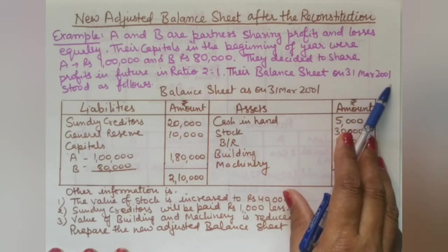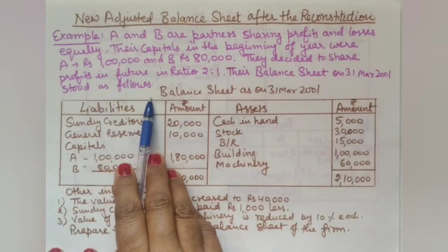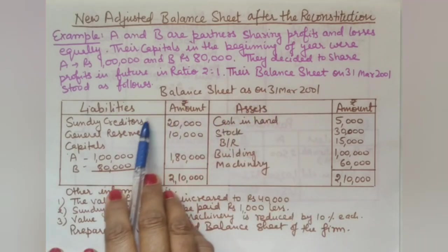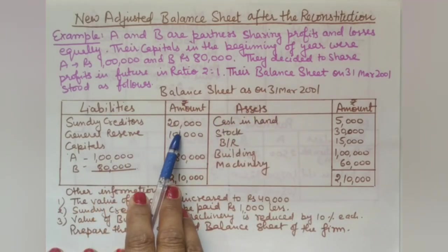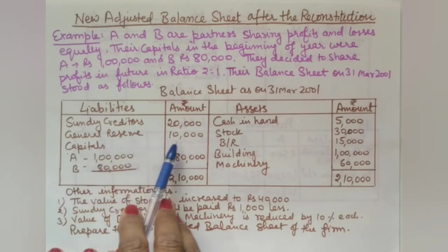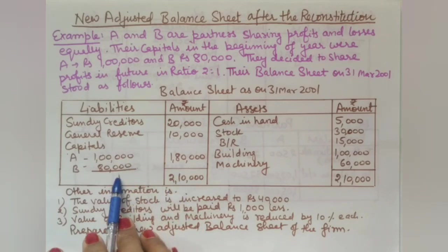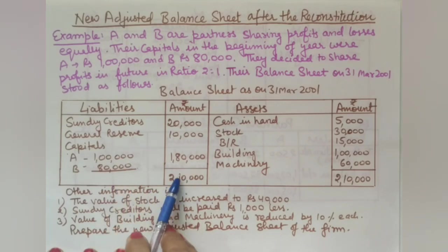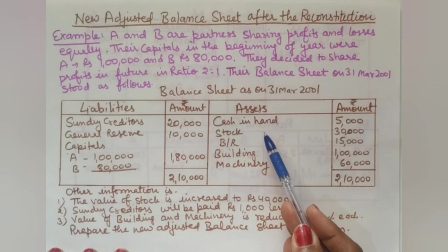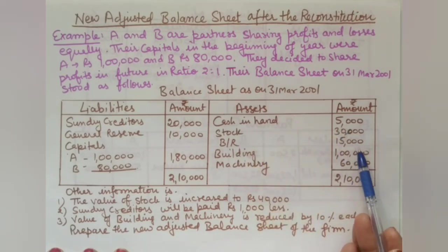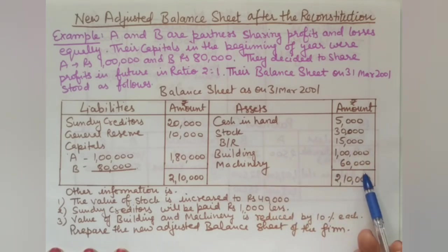Their balance sheet as on 31st March 2001 stood as follows. On the liability side: sundry creditors 20,000 rupees, general reserve 10,000 rupees, and partners' capitals — A: one lakh and B: eighty thousand. On the asset side: cash in hand 5,000 rupees, stock 30,000 rupees, bills receivable 15,000 rupees, building one lakh, and machinery 60,000 rupees. Total: 2,10,000.